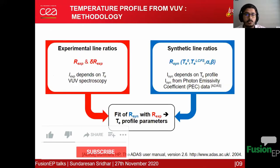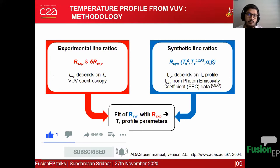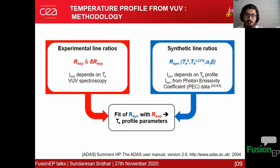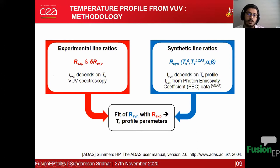For the experimental characterization of the background plasma we use VUV spectroscopy, deriving argon line intensities which depend on the electron temperature. Our strategy is to construct synthetic line ratios using photon emissivity coefficients from ADAS, which also depend on the assumed temperature profile. By fitting these synthetic line ratios to the experimental line ratios, the temperature profile parameters are estimated.